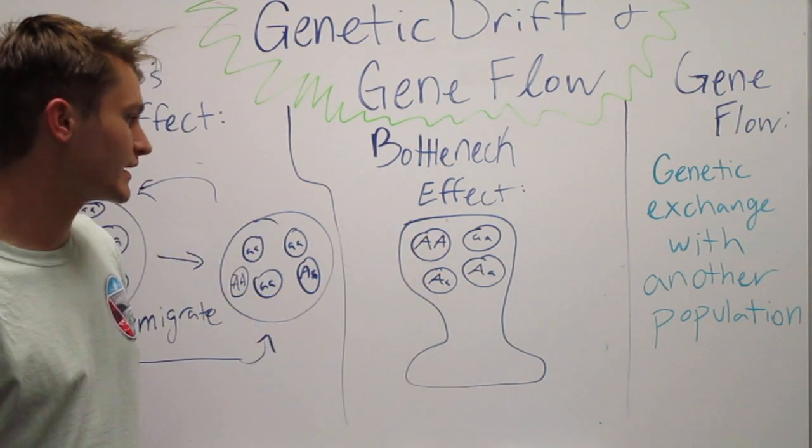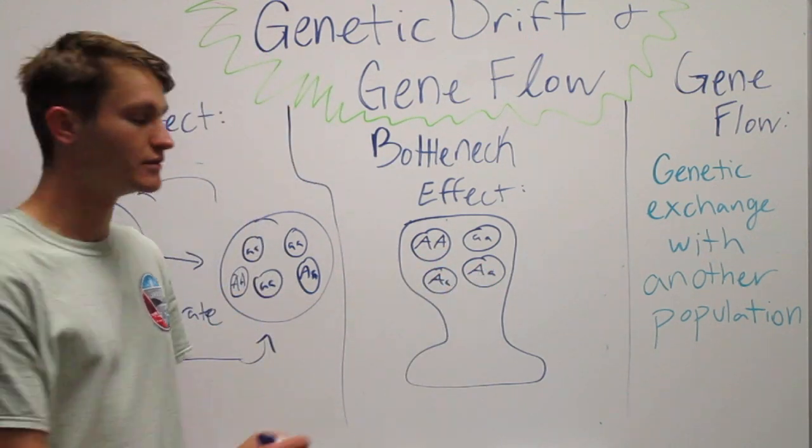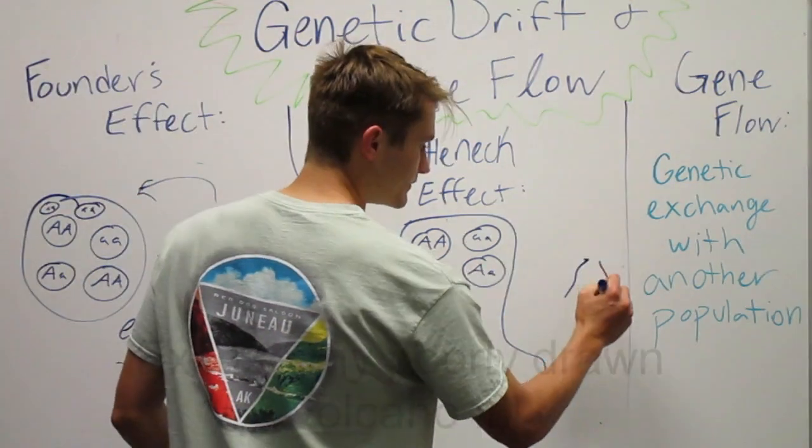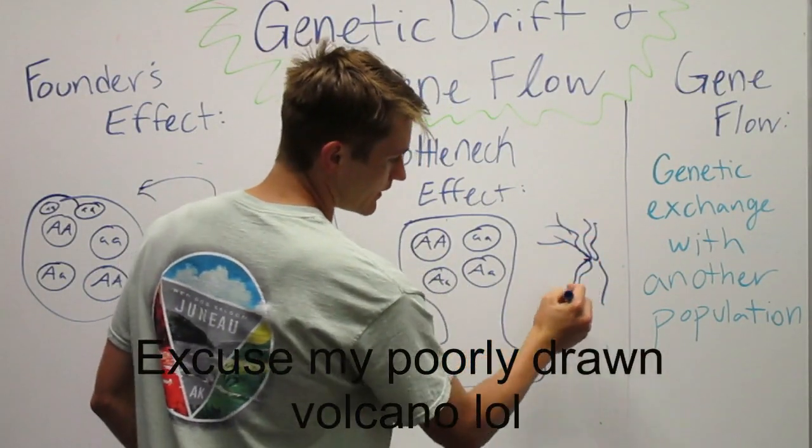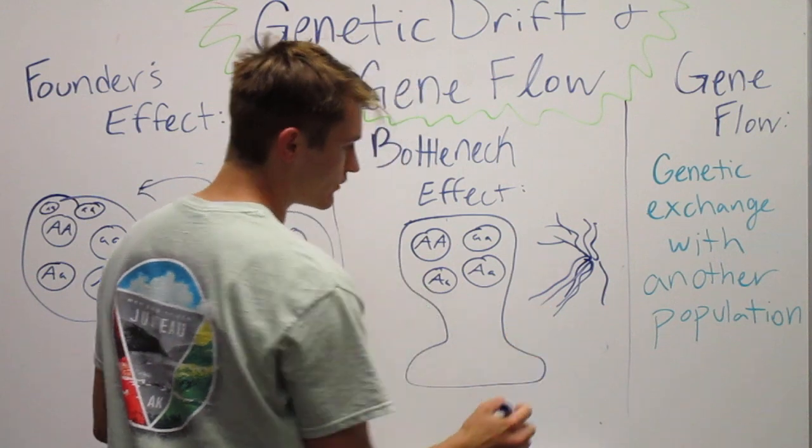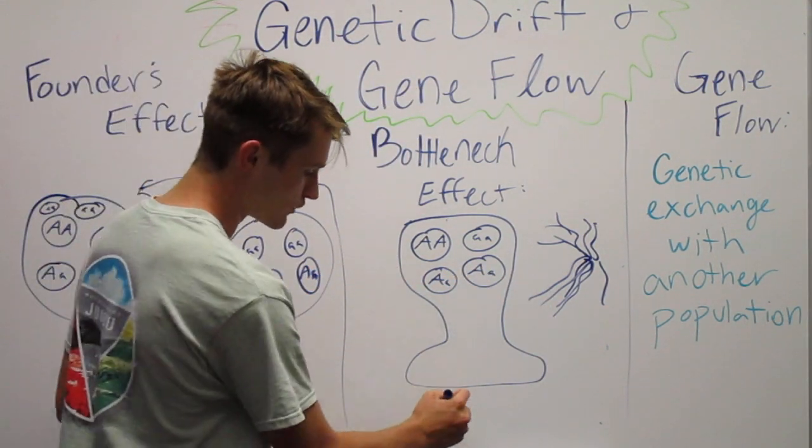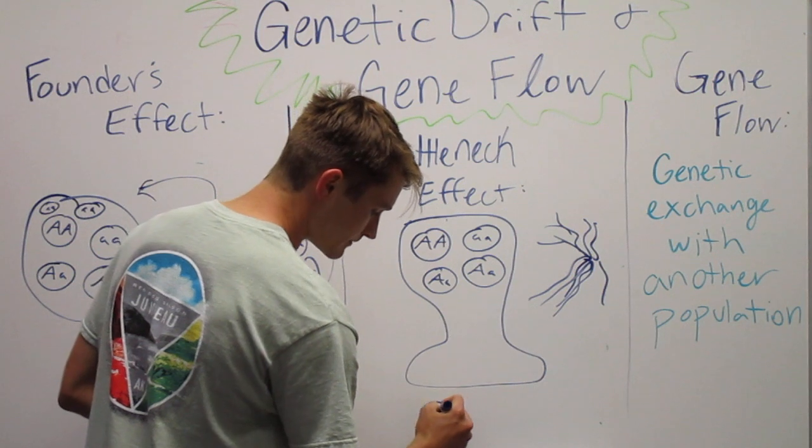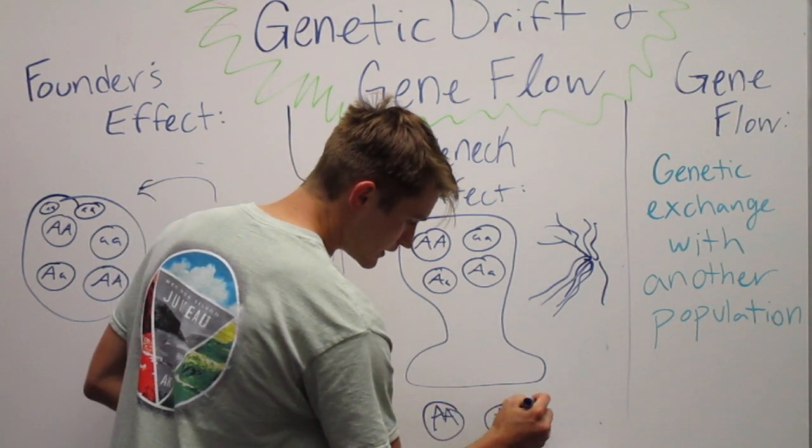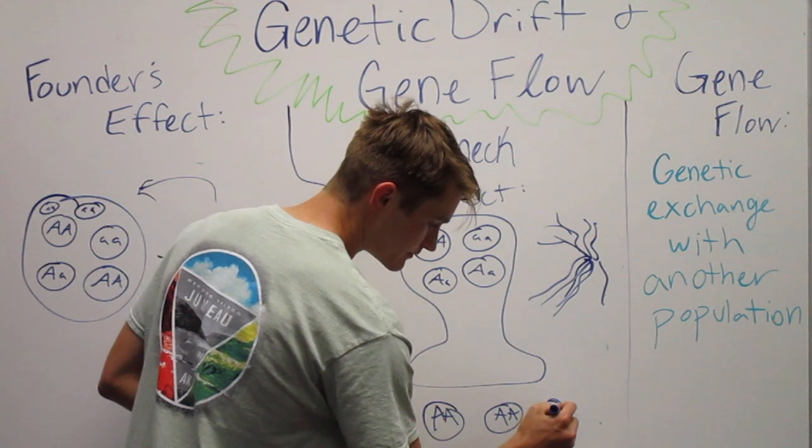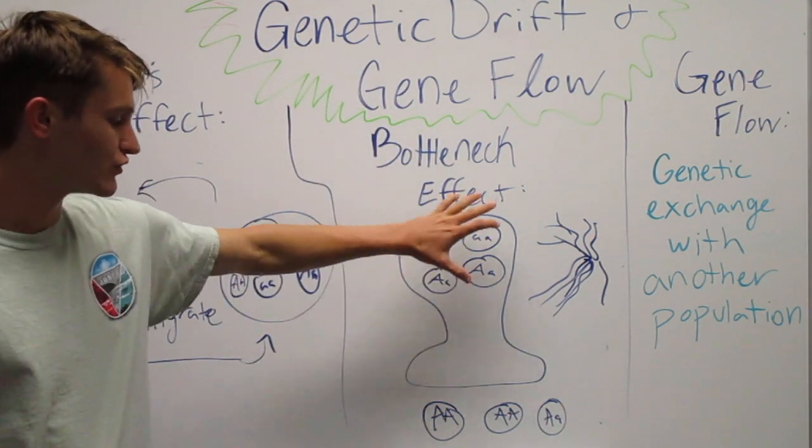And let's say a huge volcano erupted. So volcano erupted and it killed most of this population. And the only ones to survive were the homozygous dominant genes.